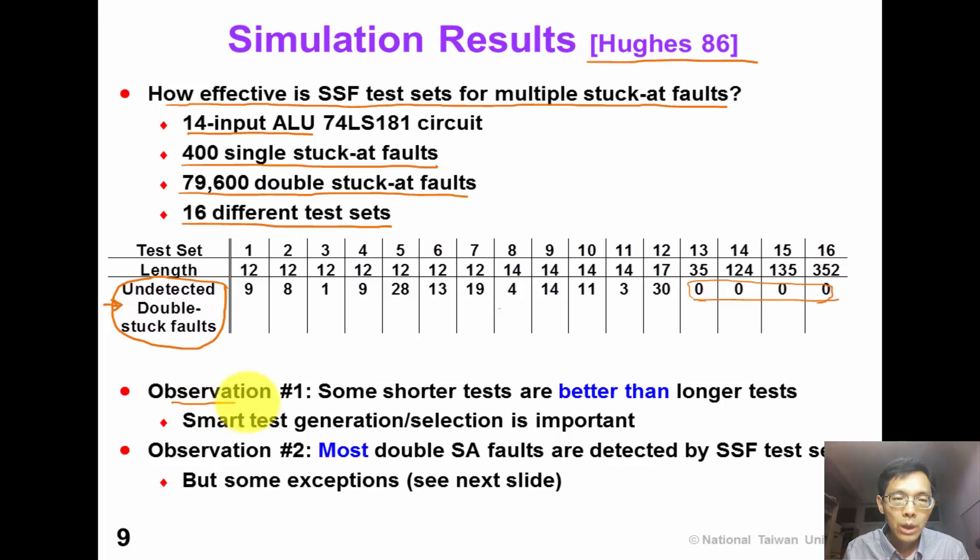From this experiment, we can have two observations. Number one, some shorter tests are even better than longer tests. For example, test number 3, it has only 12 tests. But it is better than the test number 9, which has 14 tests. So we know that smart test generation or test selection is important to improve the test quality.